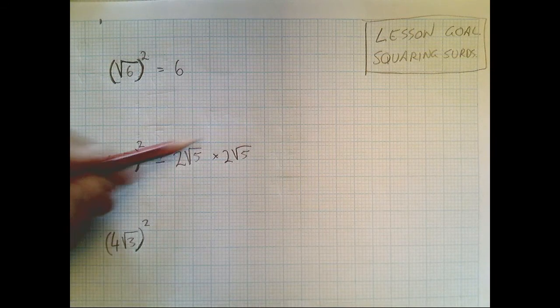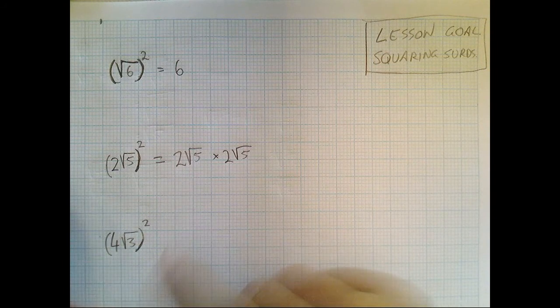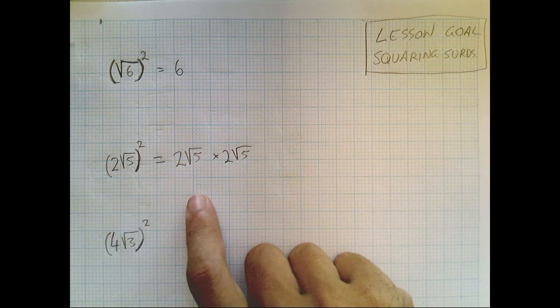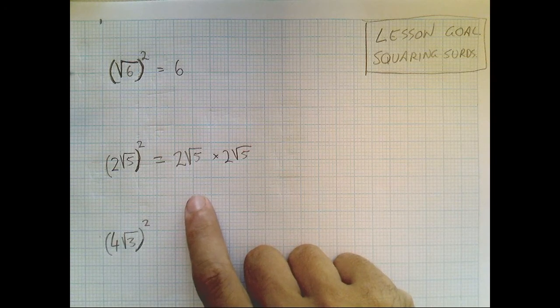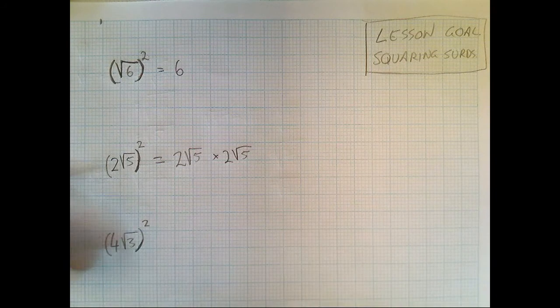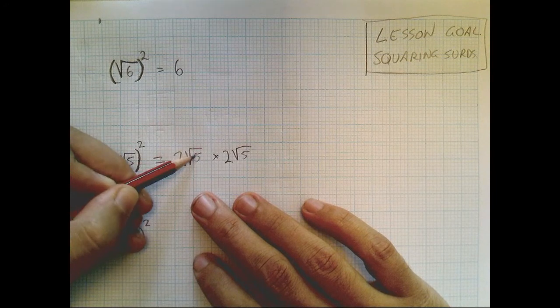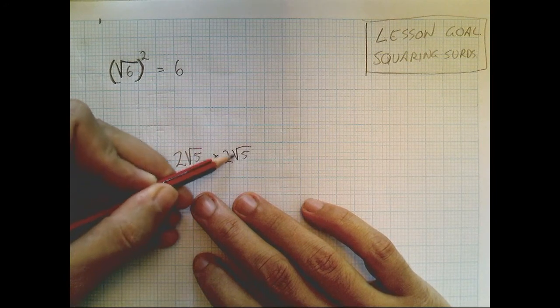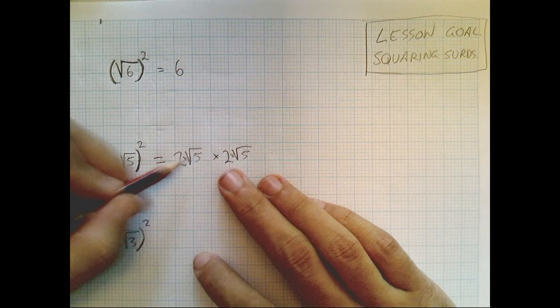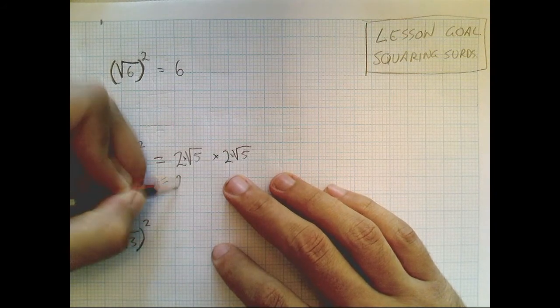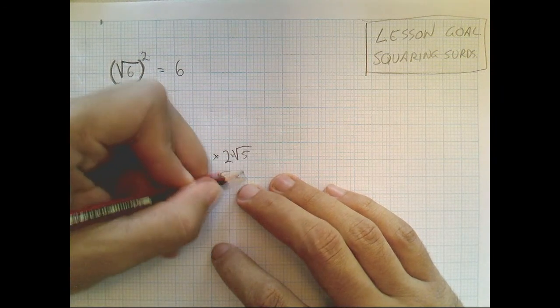Okay, now once we're here, you just need to remember something about multiplication. Multiplication, it doesn't matter what order you do things in. For example, two times three is six, but three times two is also six. Four times five is twenty, but so is five times four. So the point I'm making is multiplying, whatever order you do it in, it really doesn't matter. This says two times root five times two times root five. I'm just going to change the order that that's happening in. I'm going to put the twos together and the root fives together. So it's going to be two times two times root five times root five.